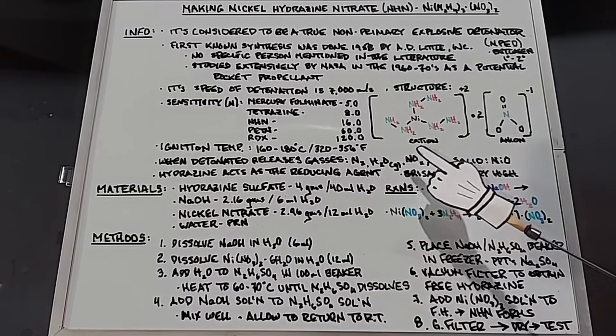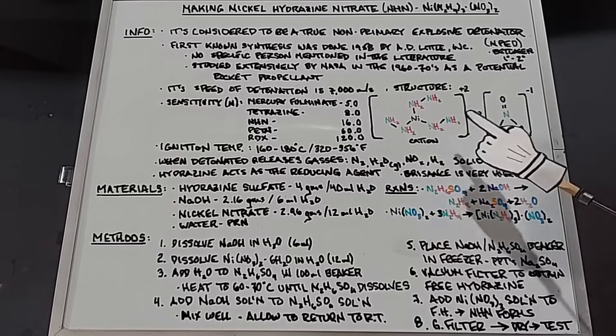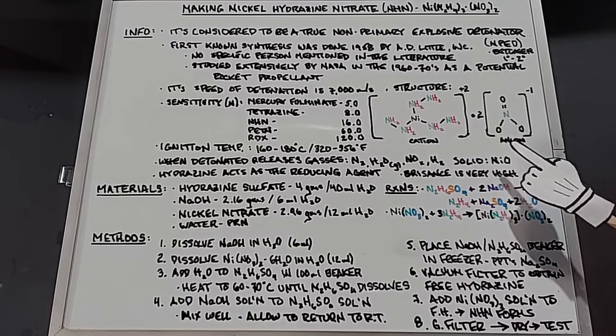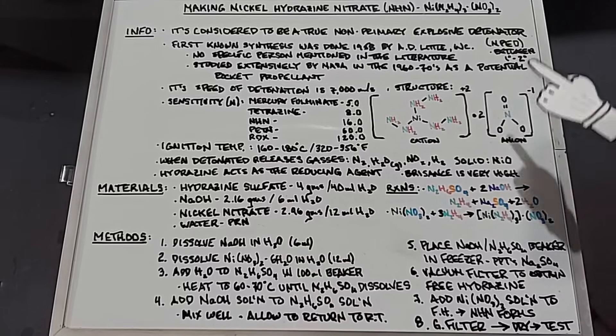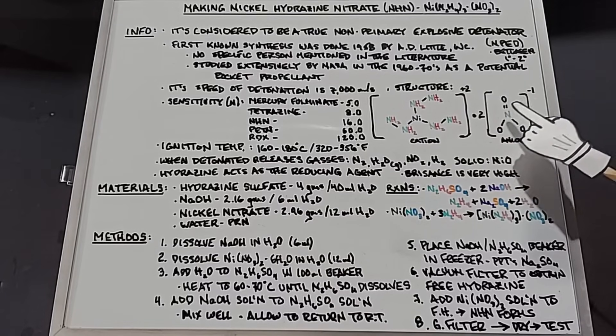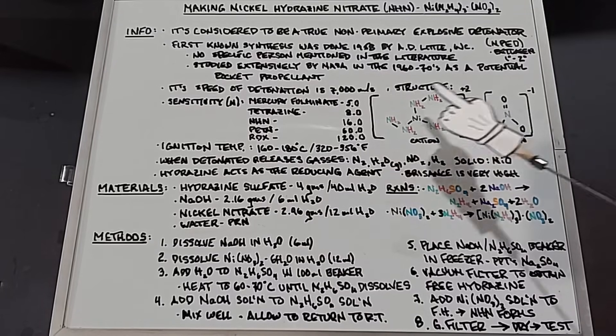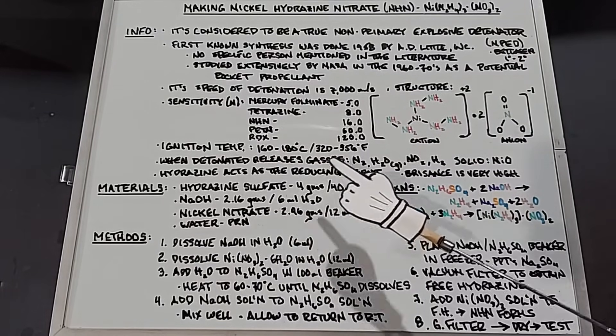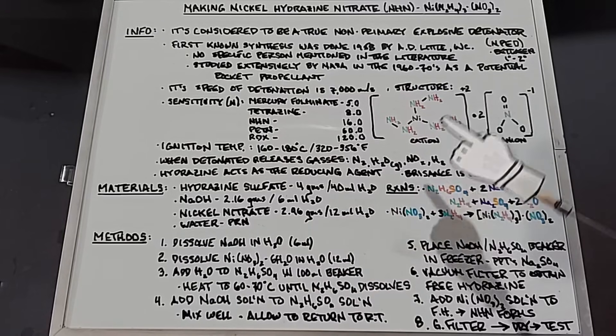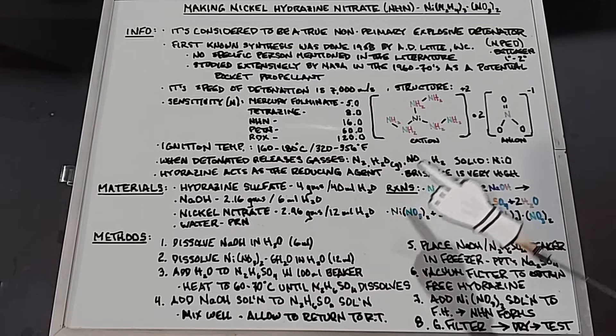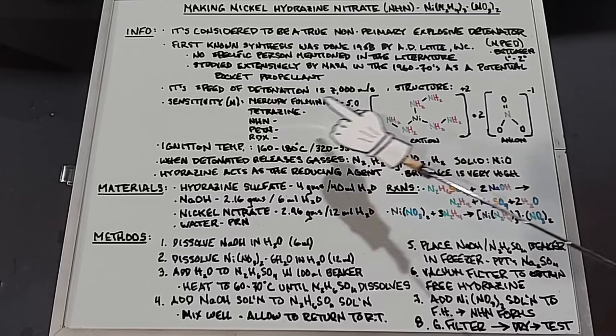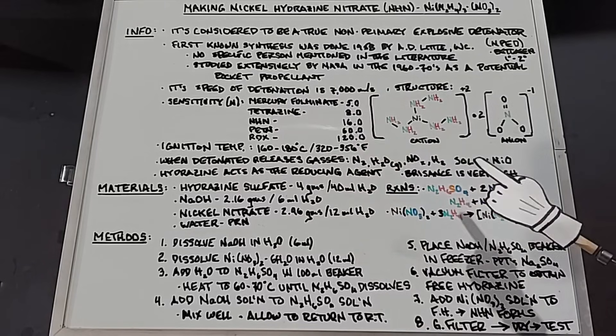NOx, which is a variety of nitrogen oxide components, hydrogen gas, and the one solid that is released is nickel oxide. As the oxygens of the nitrate component here are the oxidizers, it would make sense that the hydrazine portion acts as the reducing agent. And the last thing is that the brisance of NHN is very high. Brisance is its ability to shatter things, and due to the speed at which it detonates, it does have a high one.